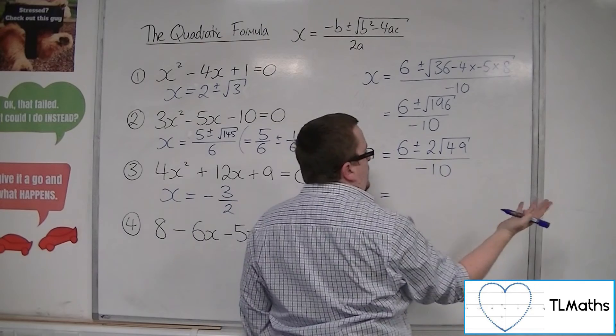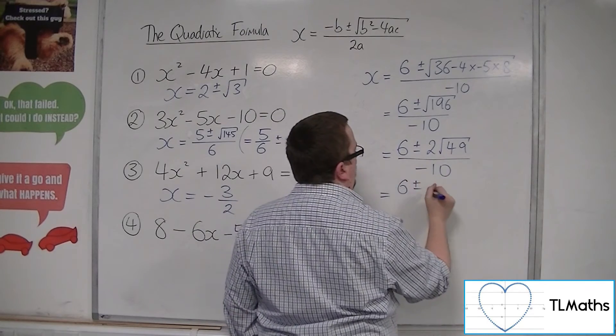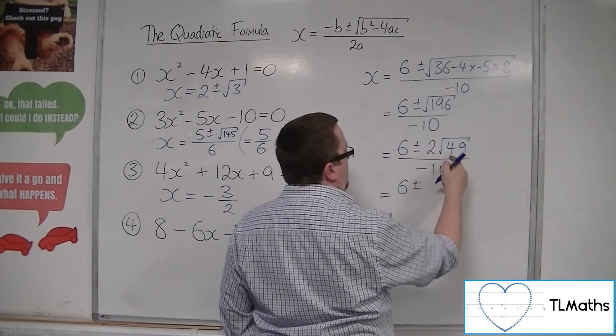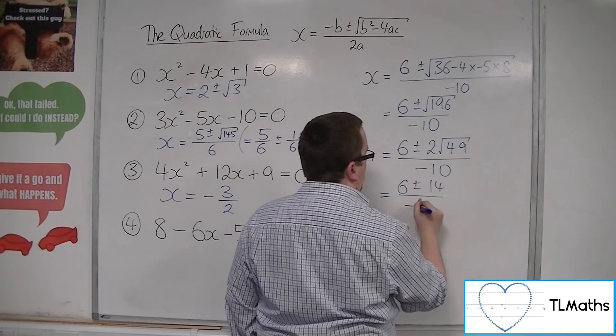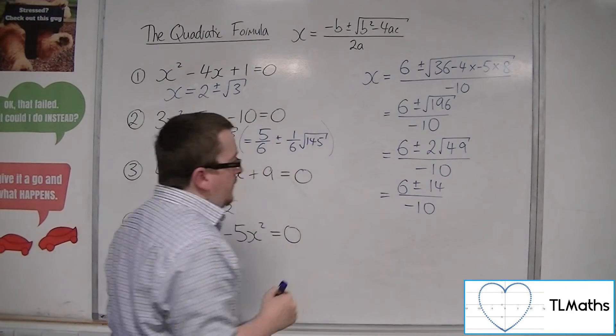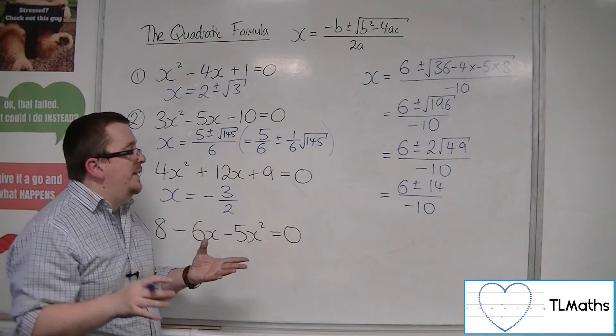So, root 49, obviously is 7, so we get 6 plus or minus 2 lots of 7, so 14 over minus 10. Now, I wouldn't want to leave it like that.